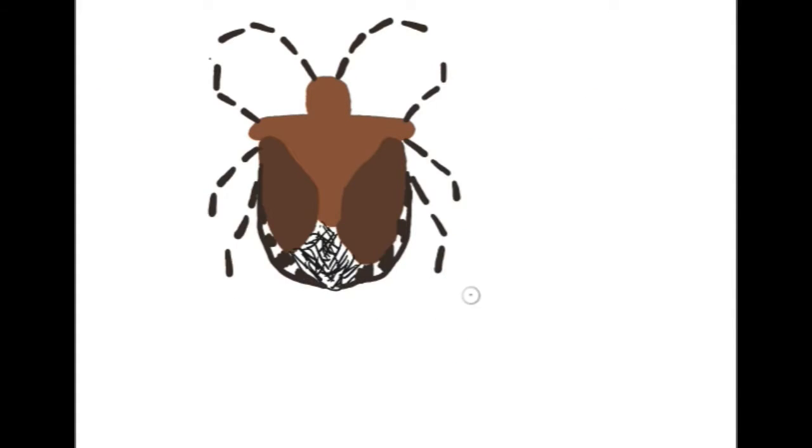The adult BMSB can be identified by the white striping on the sides of the abdomen, the antenna, and the legs.